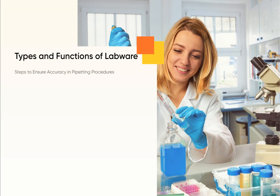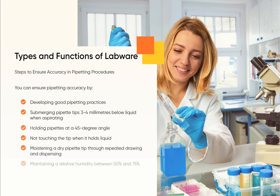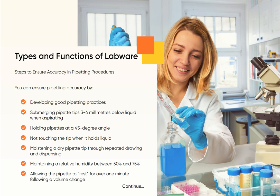You can ensure pipetting accuracy by developing good pipetting practices: submerging pipette tips 3–4 mm below liquid when aspirating, holding pipettes at a 45-degree angle, not touching the tip when it holds liquid, moistening a dry pipette tip through repeated drawing and dispensing, maintaining a relative humidity between 50% and 75%, and allowing the pipette to rest for over one minute following a volume change.